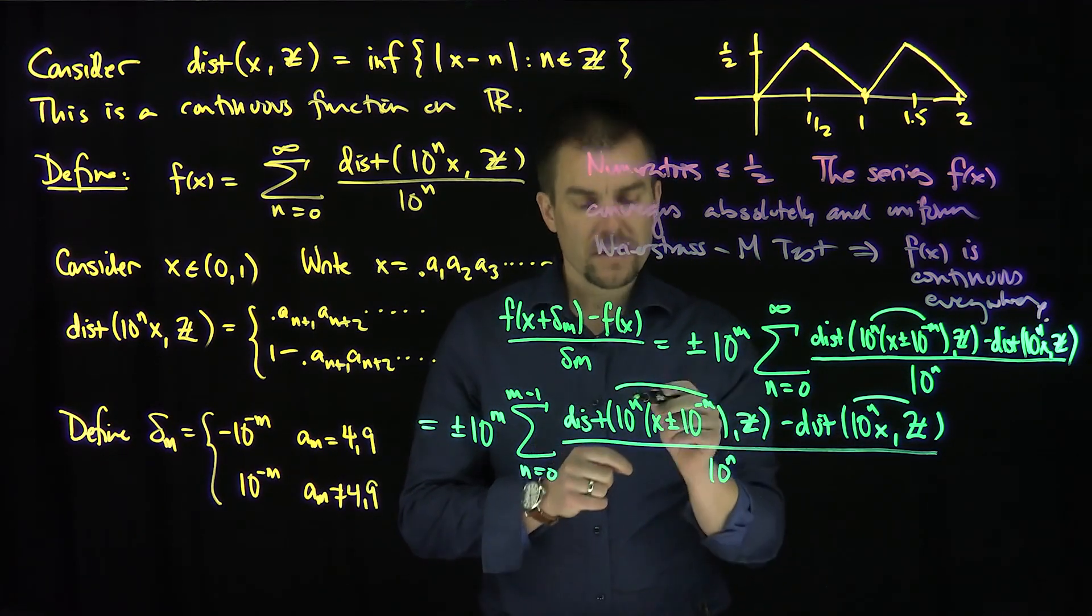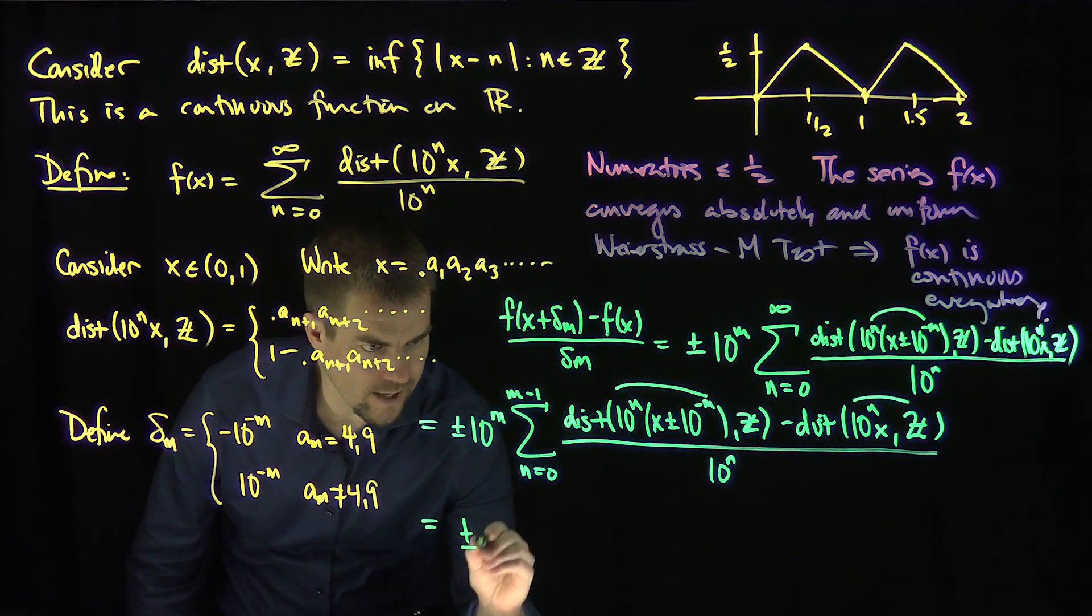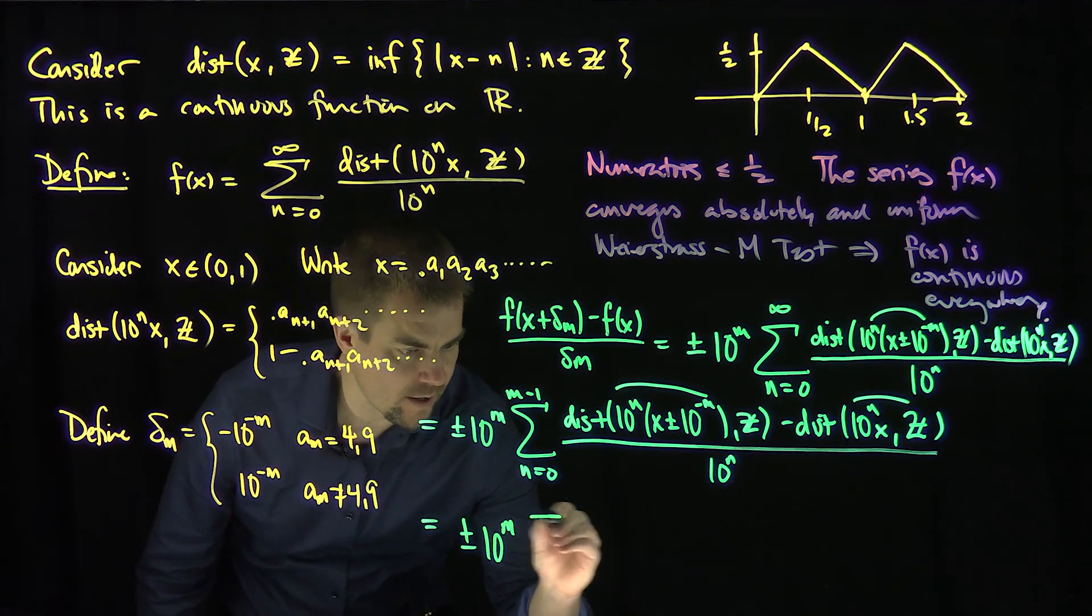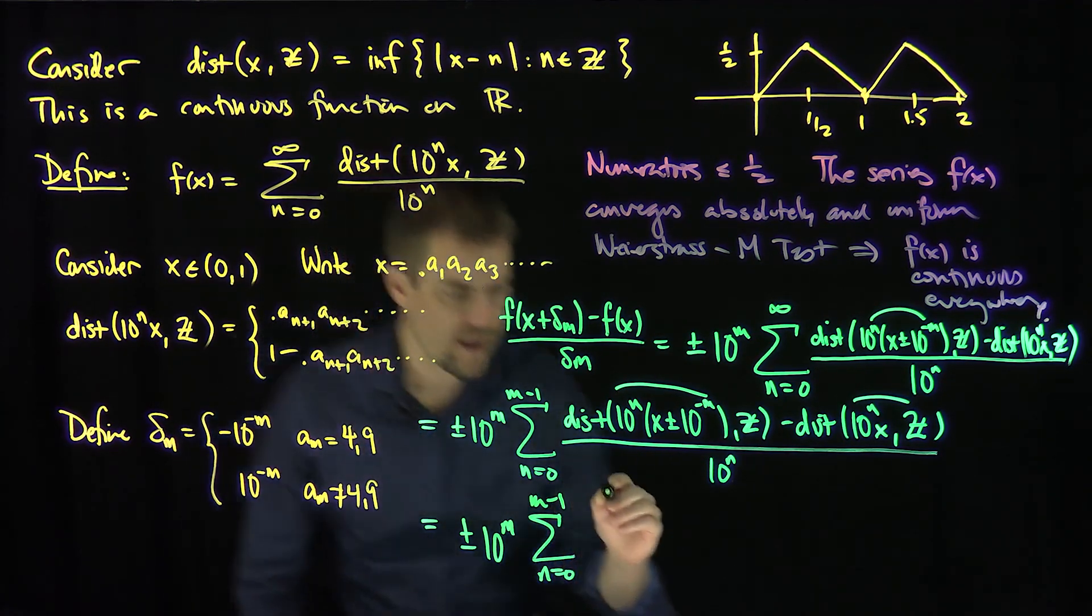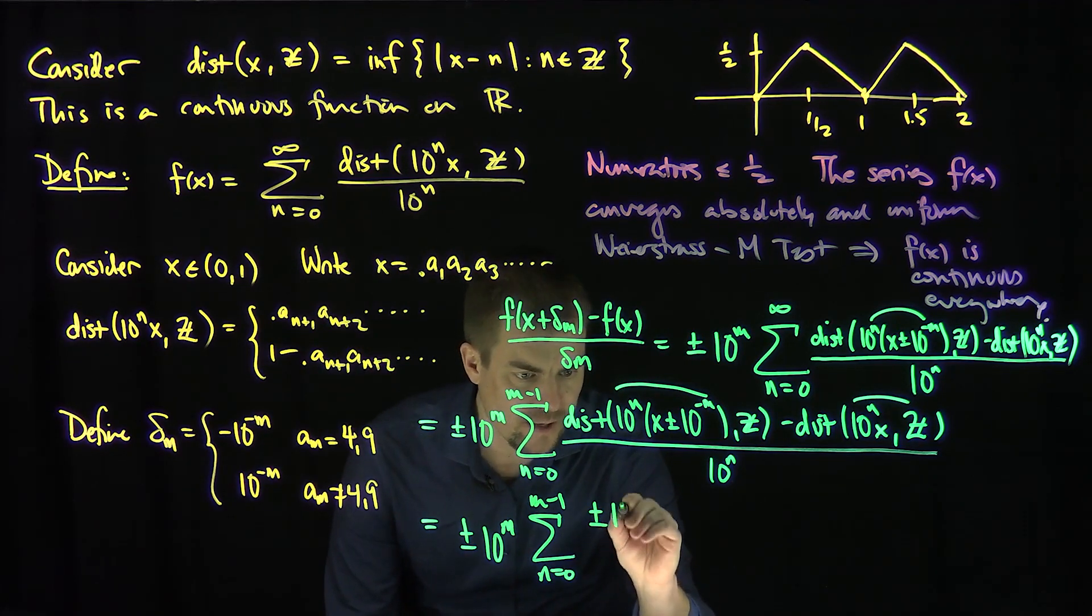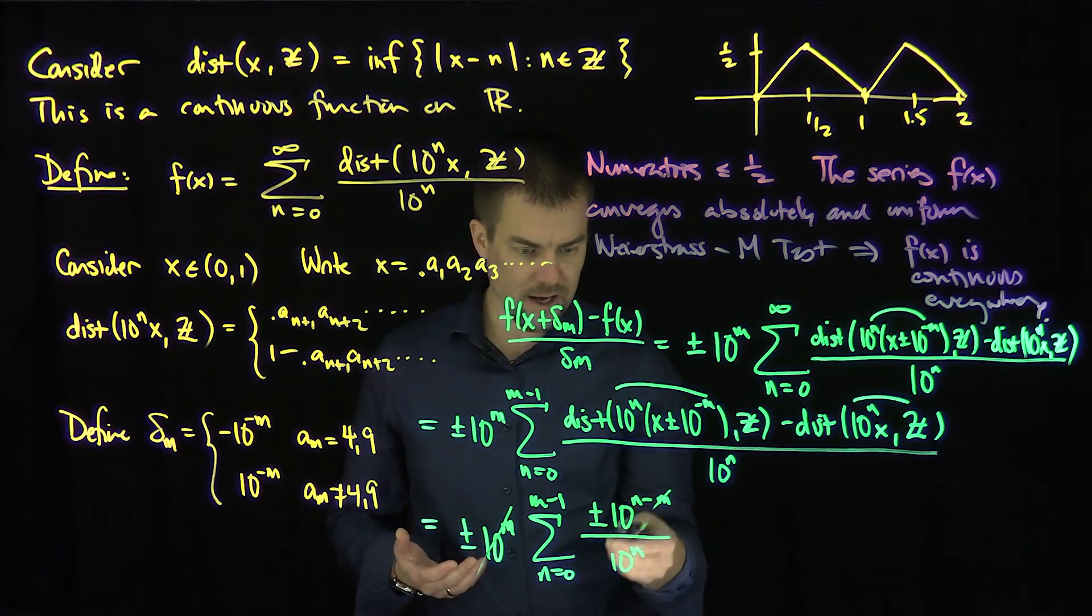...plus or minus 10^(n-m). So this is equal to plus/minus 10^m times the sum, n goes from 0 up to m minus 1, and then the top is going to be plus/minus 10^(m-n) over 10^n.